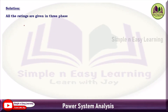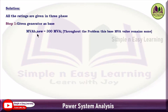All the ratings are given in three-phase. Step 1: First we need to choose the MVA base. The MVA base is given in the problem as 'select generator as a base value.' In the generator the MVA value is 300 MVA, so we take that as the base value. It remains the same throughout the problem.